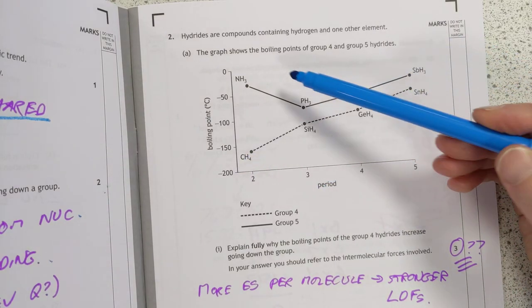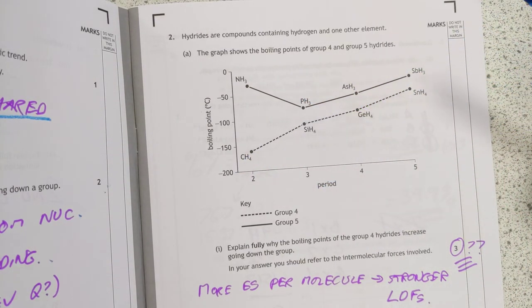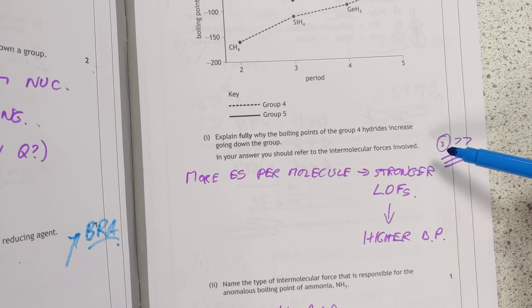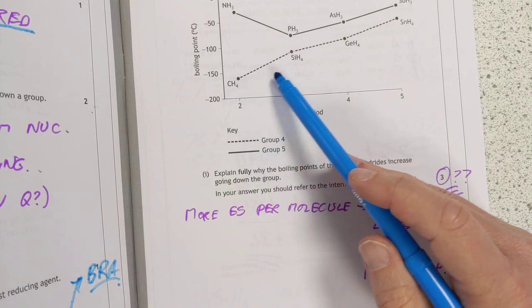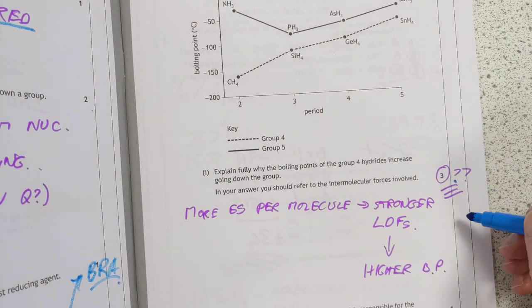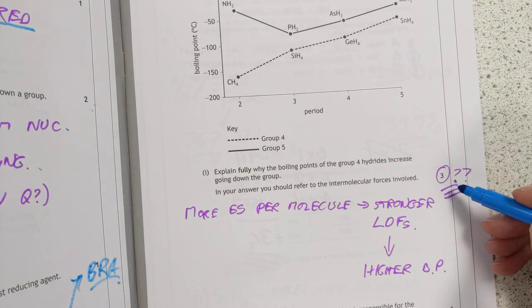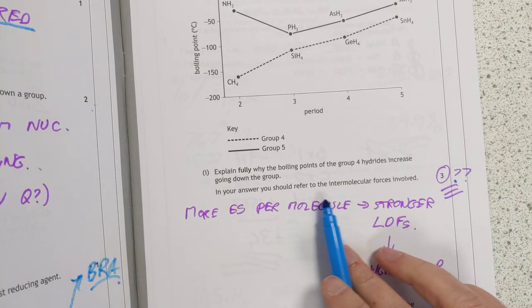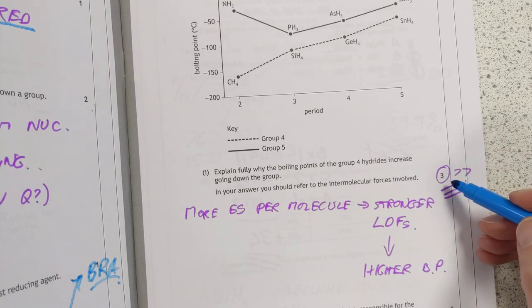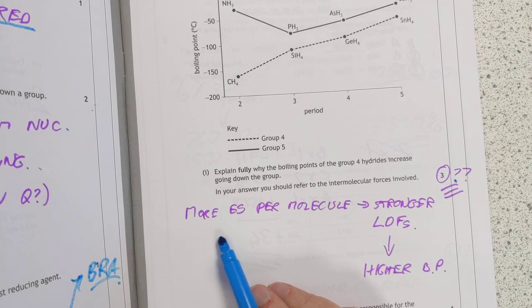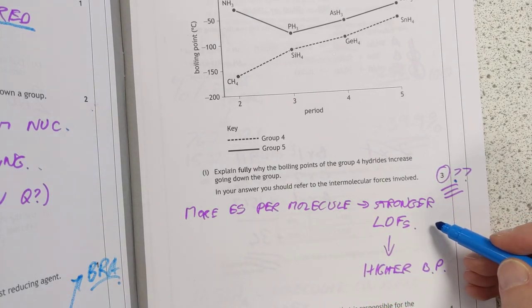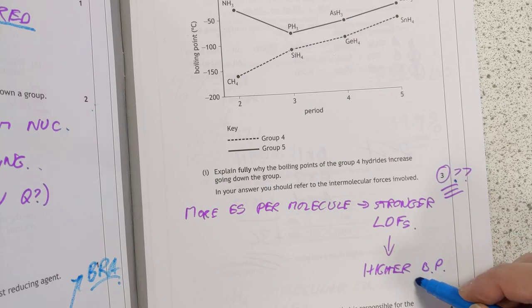Bonding point. Different hydrides here. Explain fully why the bonding points of the group four hydrides increase. So group four hydrides, this line here. Why is the bonding point increasing as you go down the group? Three marks. I'm not sure how they're going to assign these. In your answer you should refer to the intermolecular forces involved. There are more electrons per molecule as you go down the group. Therefore, there are stronger LDFs. And the stronger LDFs cause higher boiling points.